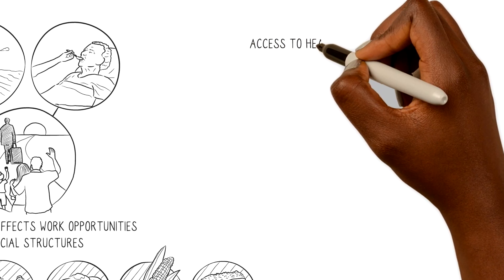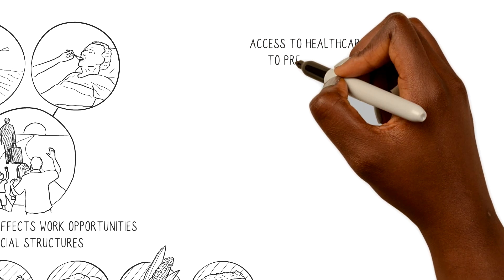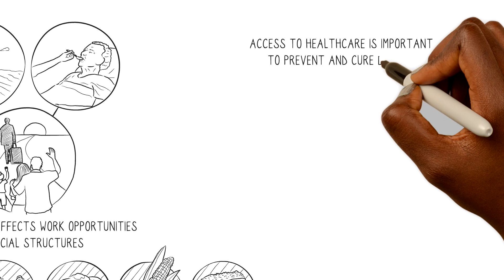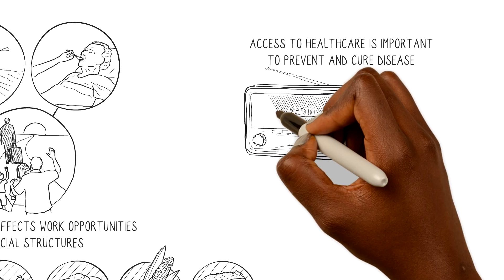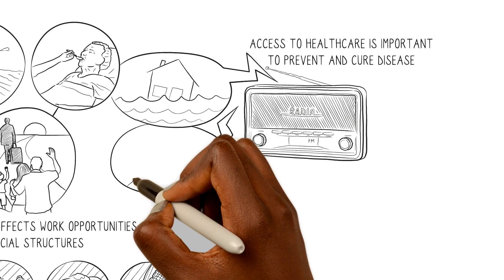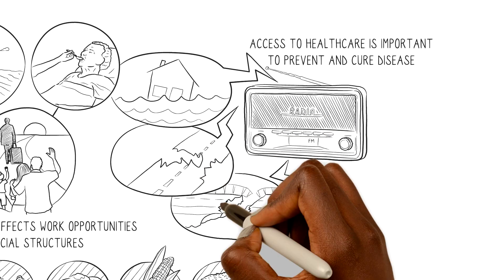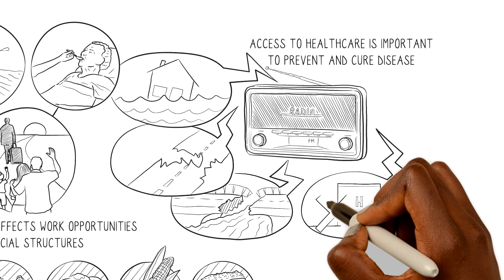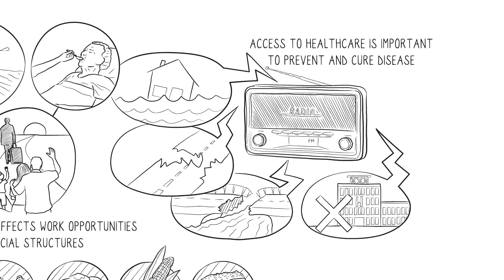Access to health care is important to prevent and cure disease. Extreme weather events, such as flooding, may damage roads, bridges, and health care facilities, making it difficult for people to access health care when sick.